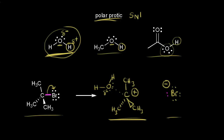For our bromide anion, which is negatively charged, it would be the other end of the water molecule. The partial positive hydrogens would interact and help to stabilize that anion. So polar protic solvents help to stabilize both the carbocation and the anion, and that solvation of both cations and anions helps the SN1 mechanism proceed. That's why a polar protic solvent will favor an SN1 mechanism.